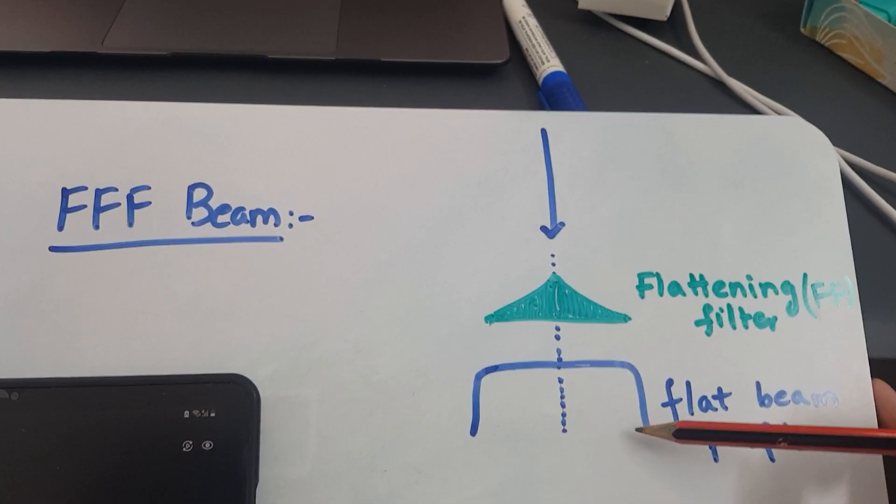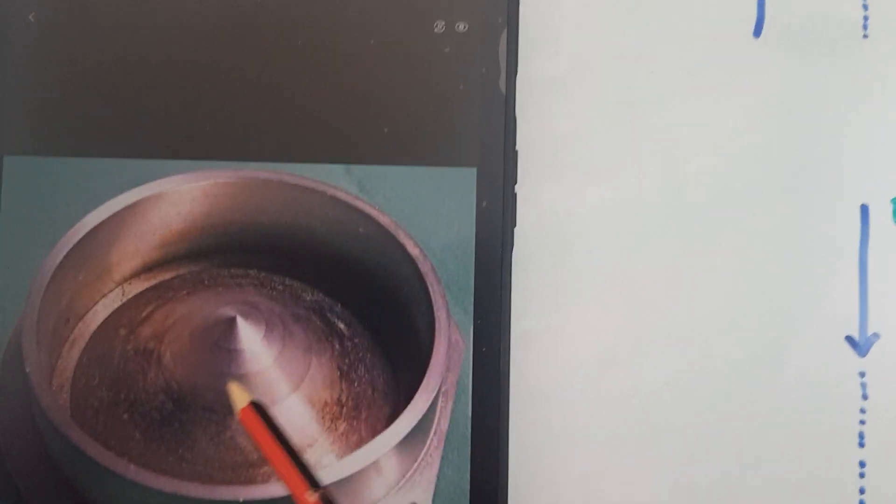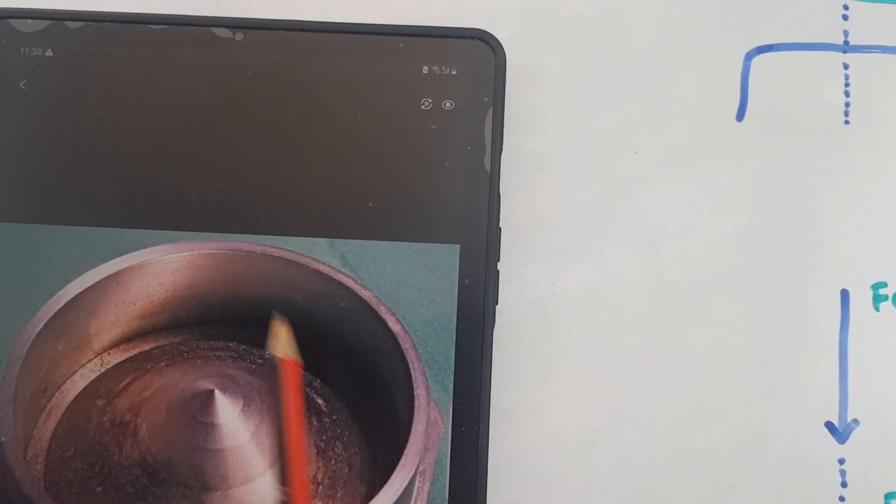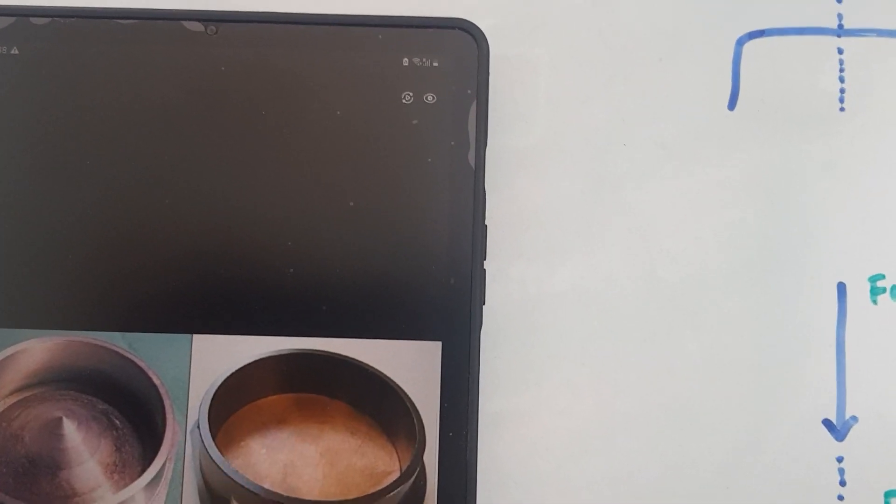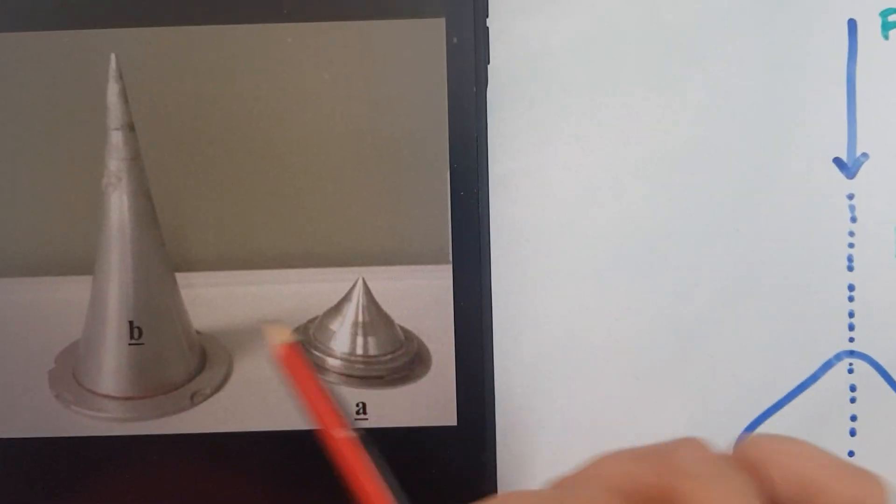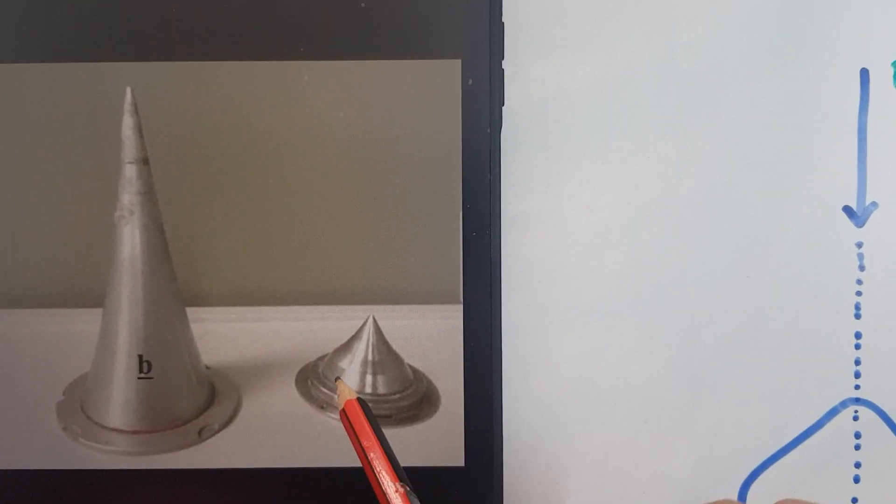This is how a flattening filter looks like, here thicker and here thinner. And this is without the flattening filter. Flattening filters, based on different energies, you can use different types of flattening filter based on different energies.